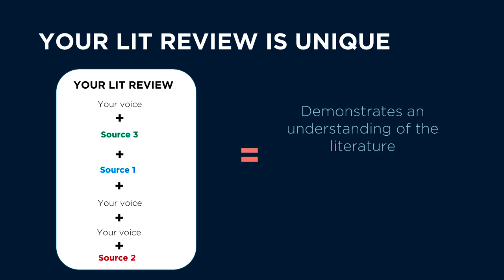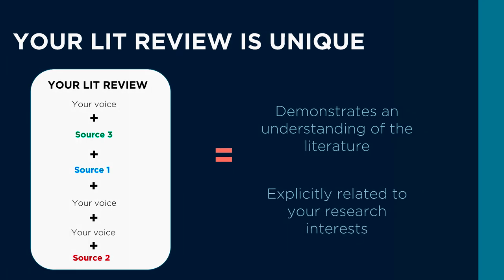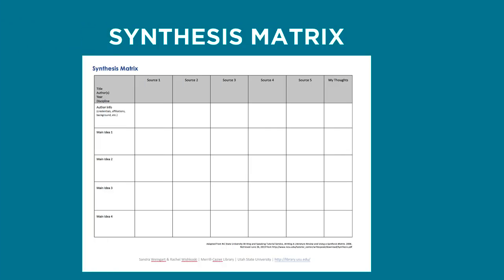This means you're developing your own understanding of the literature and explicitly stating what it means to your research. A helpful tool you can use to engage in synthesis is a research matrix, which helps you begin to organize by idea and then add your own thoughts as you read articles.